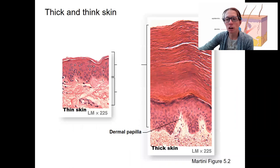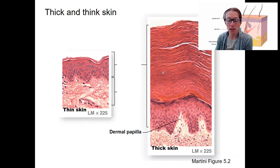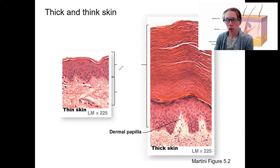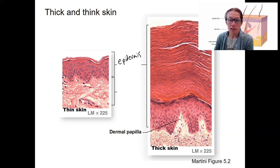Before we talk about the layers, there are two types of skin, and they depend on the epidermal thickness. There's thick and thin skin, named for the thickness of the epidermis. On top here is the epidermis — this is thin skin, and this is thick skin, very thick.